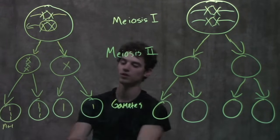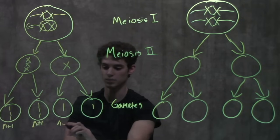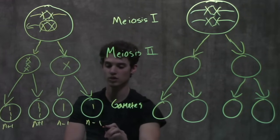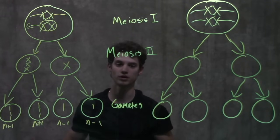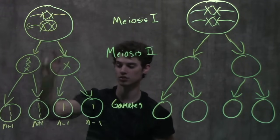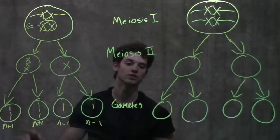And this would be n-1 and n-1. Normally there should be 2, 2, 2, and 2, but because of nondisjunction here, every single gamete is a mutant—they don't have the right number of chromosomes.